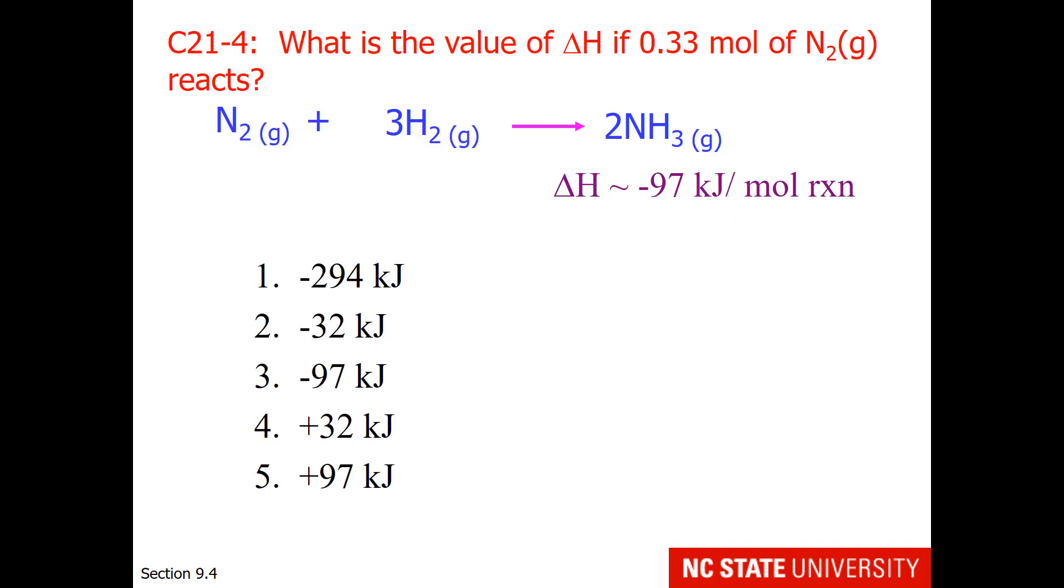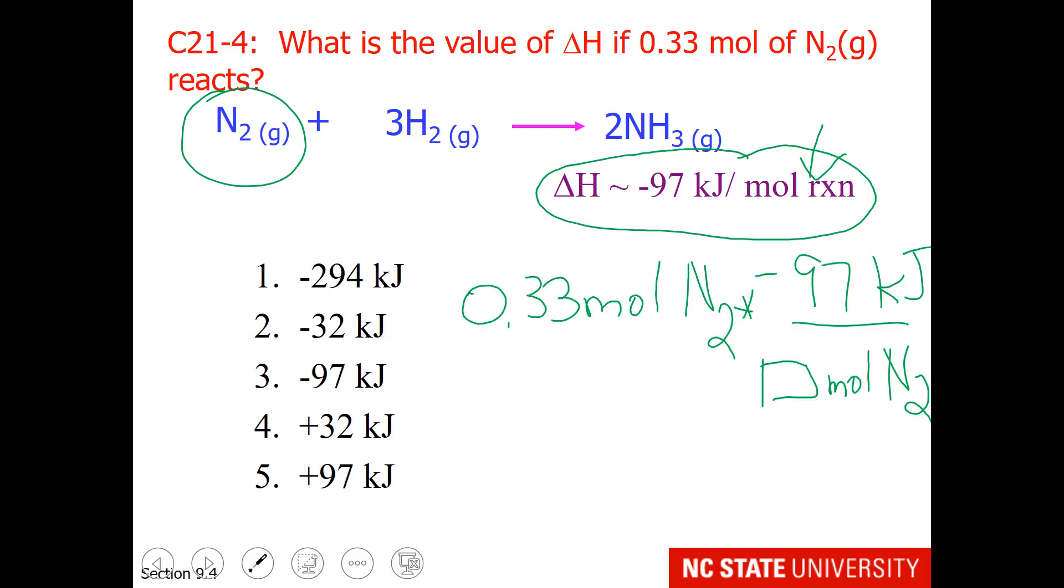This brings us to our student question. What is the value of delta H if 0.33 moles of N2 gas reacts? This ratio is per mole of reaction, so we can substitute what we need on the bottom for the material that we're considering, in this case, N2. So fill in the correct coefficient for moles of N2, and you'll have yourselves the correct answer.